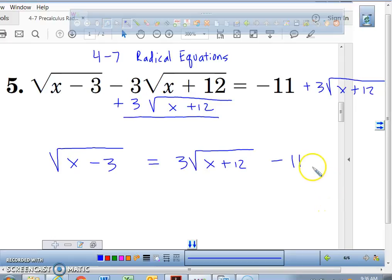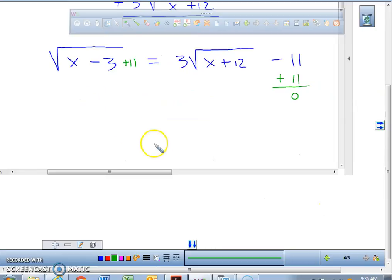We have the square root of x minus 3 equals 3 times radical x plus 12 minus 11. Now, in the previous class, we actually solved it with the minus 11 on this side. What I'd like us to do, and just trust me, this will make the problem slightly easier. We're going to add 11 to both sides so we don't have to worry about that particular one.